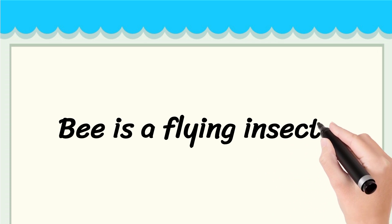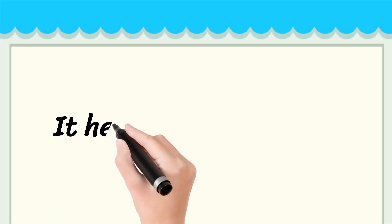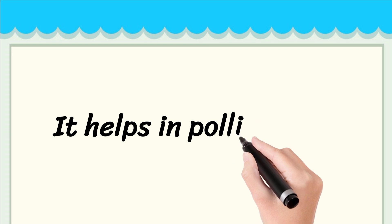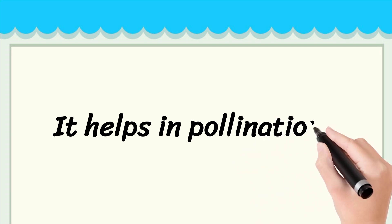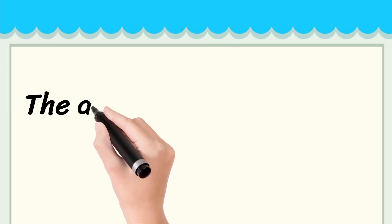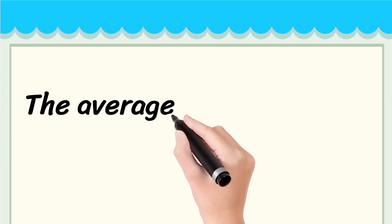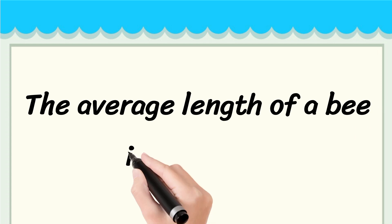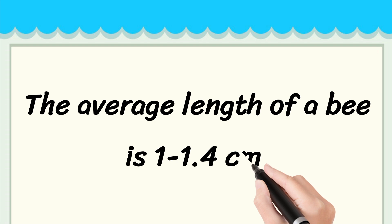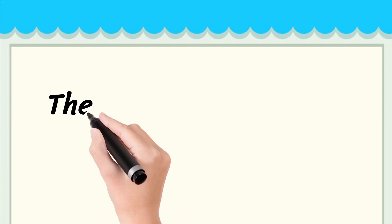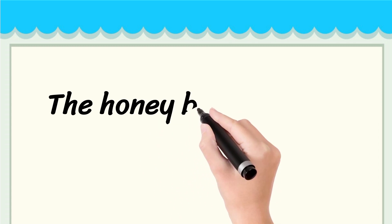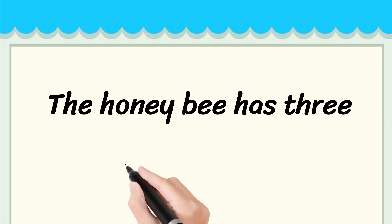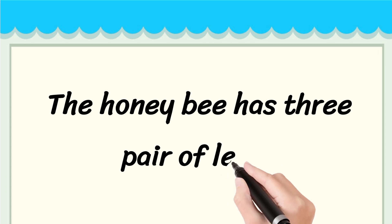Bee is a flying insect. It helps in pollination. The average length of a bee is 1 to 1.4 cm. The honey bee has 3 pairs of legs.